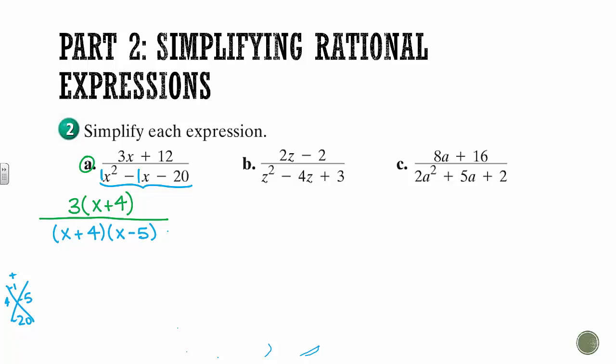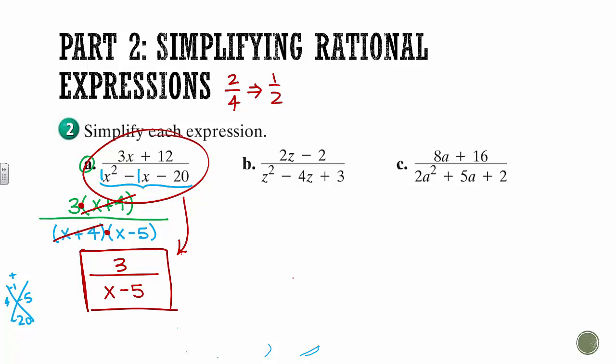And then see what crosses off. So again, everything has to be multiplying before you can cross stuff off. Since these guys are multiplying, we can see that we have an (x+4) in top and bottom, so those cross off. And we're just left with a 3 on top, and on the bottom, x-5. And that's it. This right here that we just boxed up is the simplified version of this thing that we started with. So if you, again, think back to numbers, 2/4 gets simplified to 1/2. That's all we're doing here. We're just simplifying this.